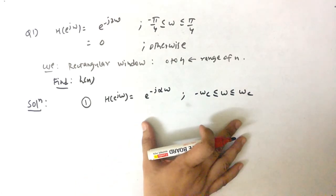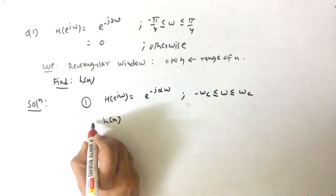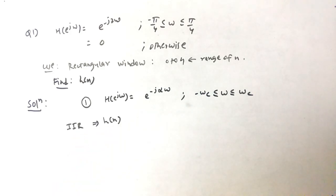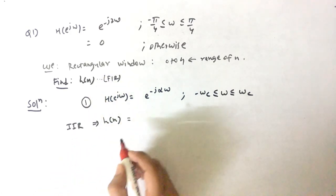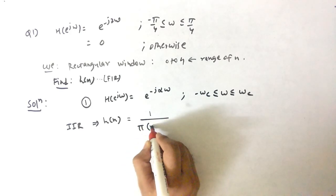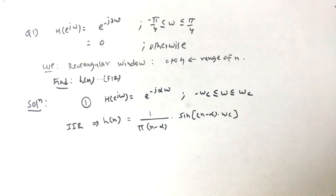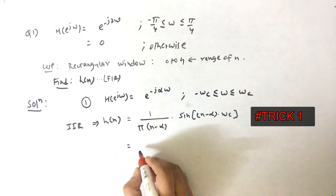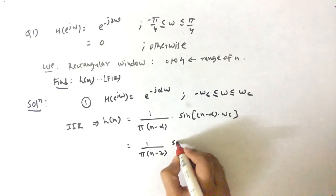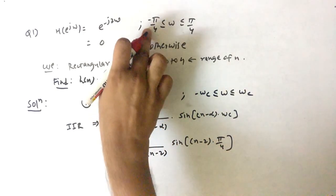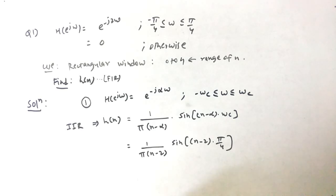First, by trick: if H(e^jω) is in that form, then h(n) — note this is infinite impulse response — the answer is (1/π) · (1/(n−α)) · sin((n−α)·ωc). So for this question the answer should be (1/π) · (1/(n−2)) · sin((n−2) · π/4), taking the positive cutoff value ωc = π/4. That is Trick #1.